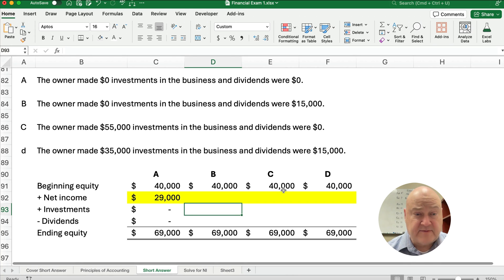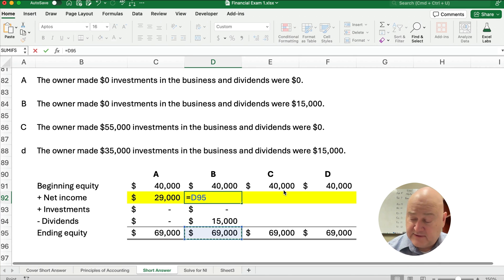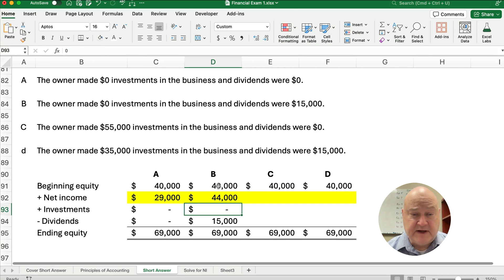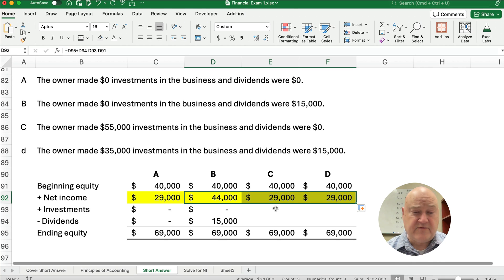What if the owner made zero investments and the dividends were 15,000? I'm just going to enter this as a positive number. So we can do the same math. I'm going to do it one more time and then copy it across. We're going to work backwards because we're trying to find out what was net income. So 69,000, I'm going to add back the 15 because it was a subtraction. I'm going to subtract out the investment because that's a plus. I'm going to subtract out the 40,000. So our beginning equity of 40 plus net income of 44, that's 88, minus 15 gives us 69,000. I can just copy this across. This is why we do Excel. And so if this is zero, then our answer for net income is 29,000.